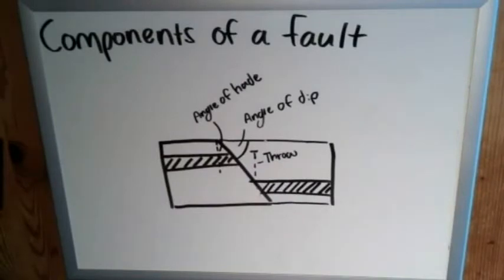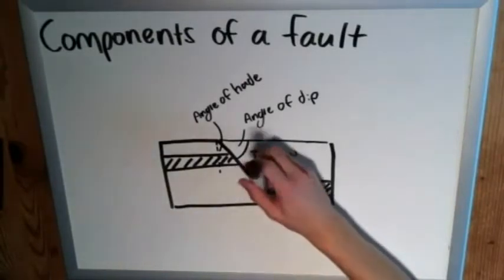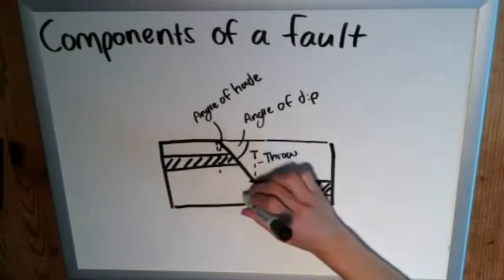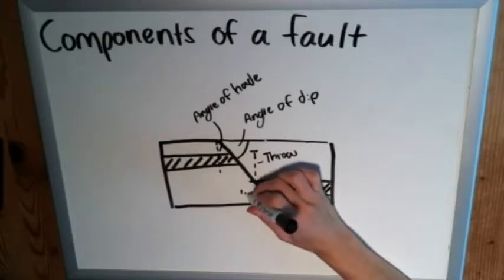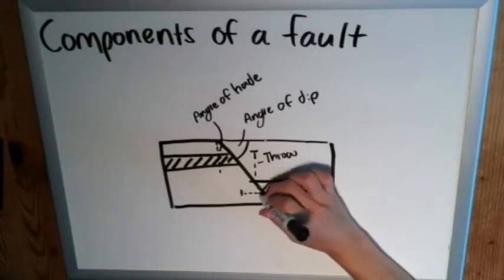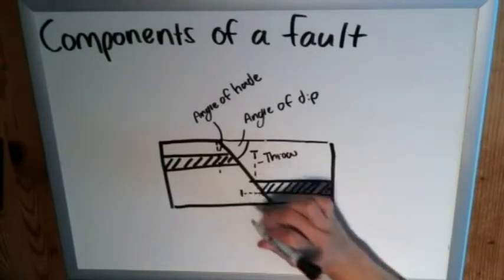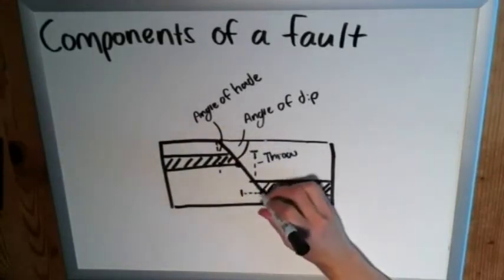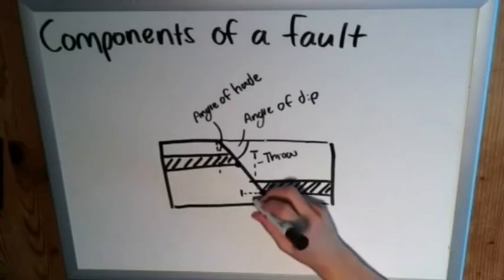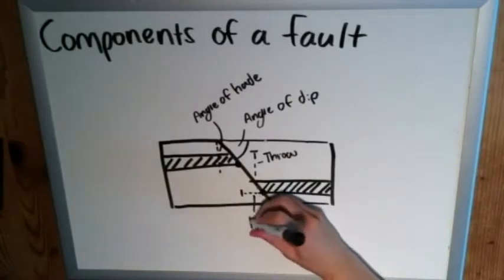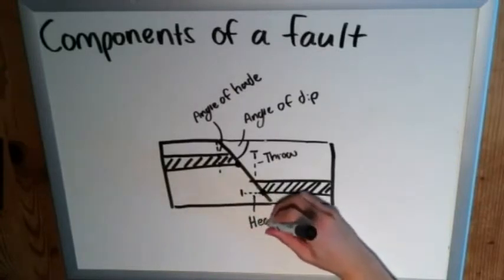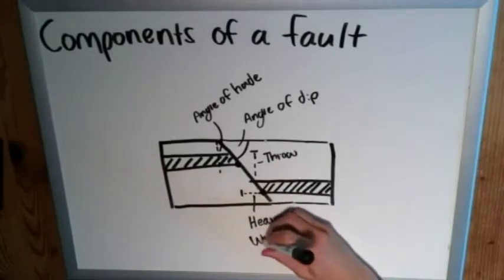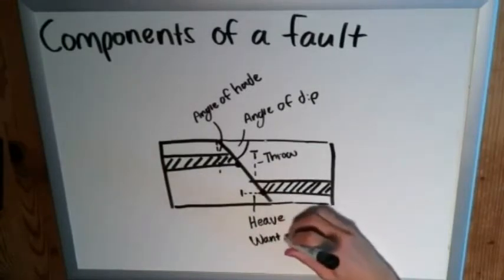And complementing throw we have this here. If you kind of draw a horizontal component from this piece to this piece between the two edges, and once again we're going from the bottom to the bottom pieces here. So we're going from this corner on this piece of the strata to this corner on this piece of the strata. This little horizontal displacement here is known as the heave, or occasionally known as the want heave.